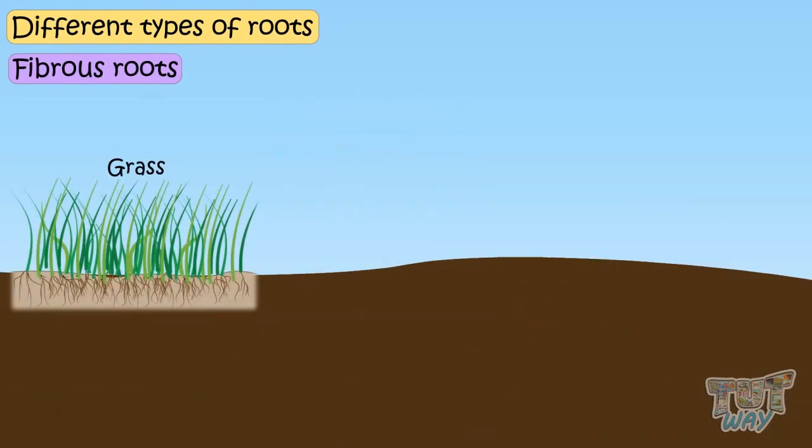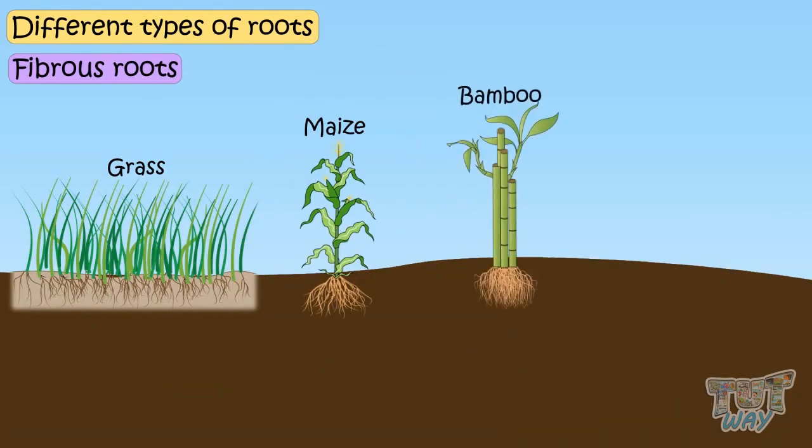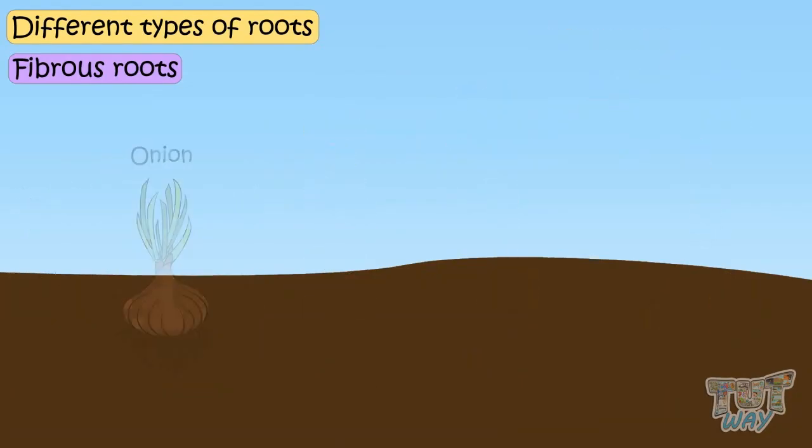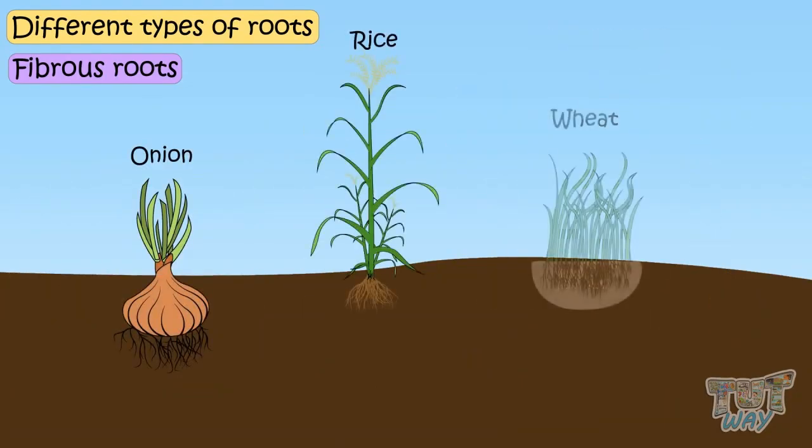Grasses, maize, bamboo, coconut tree, onion, rice and wheat are the plants that have fibrous roots.